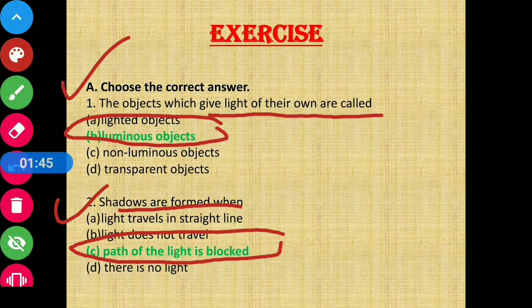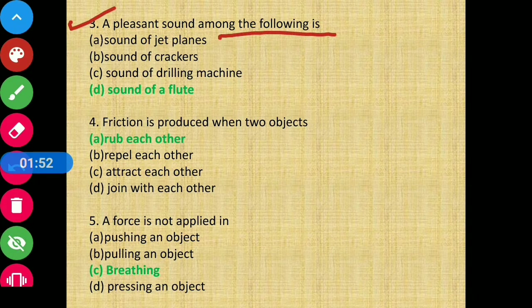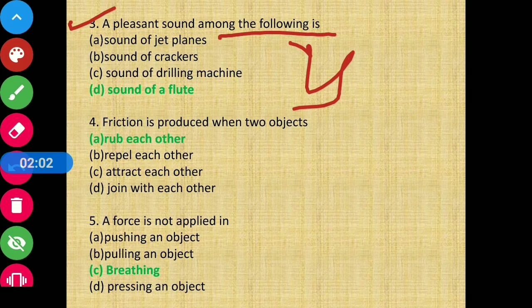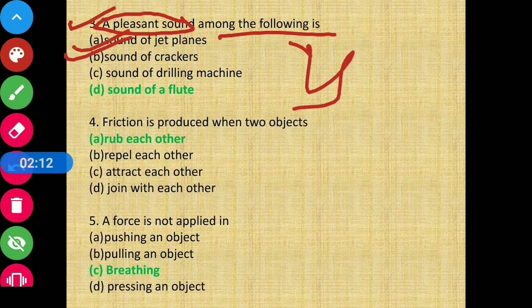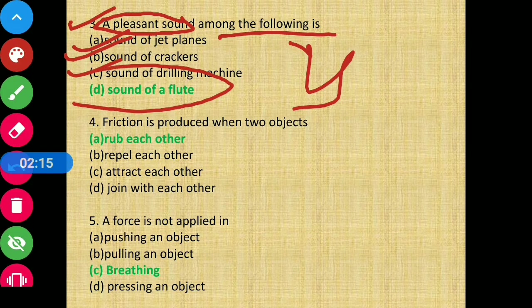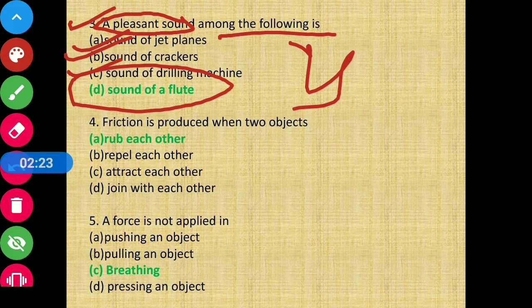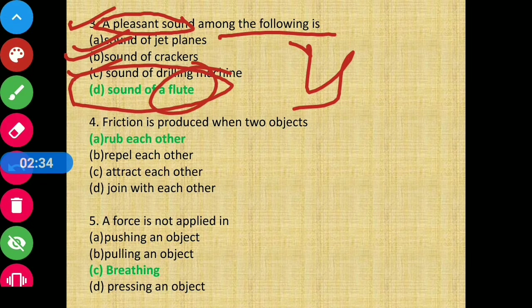Question number three: A pleasant sound among the following is - in sab mein se kaun se sound ko hum pleasant sound keh sakti hai? We know that sound has four types: soft, pleasant, loud, unpleasant. Among sound of jet planes, sound of crackers, sound of drilling machine, or sound of a flute - obviously sound of flute is the correct answer because it gives melodious music that is pleasing to our ears. So option D is the correct answer.